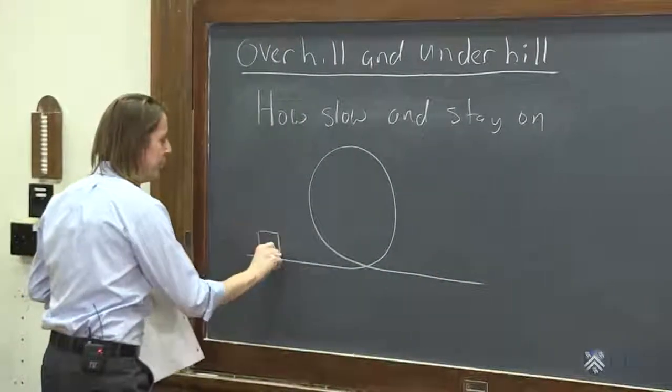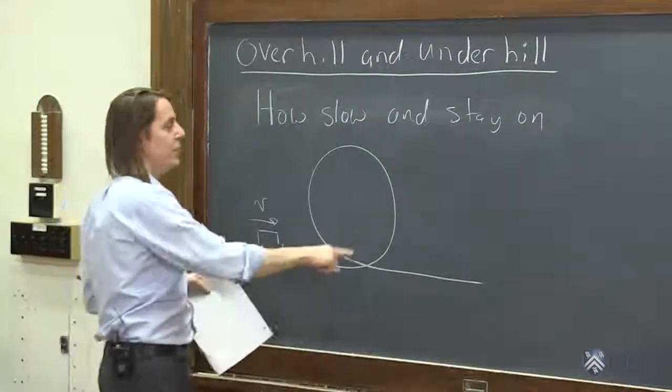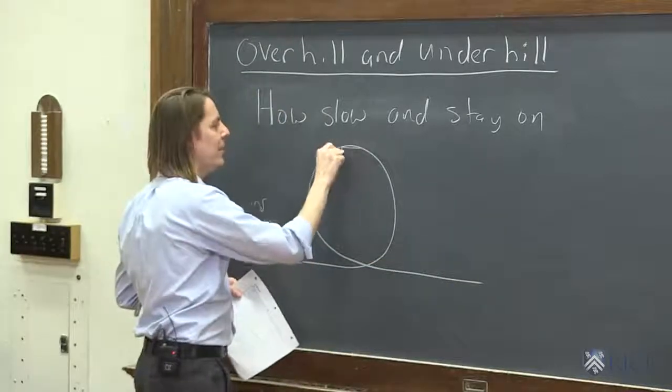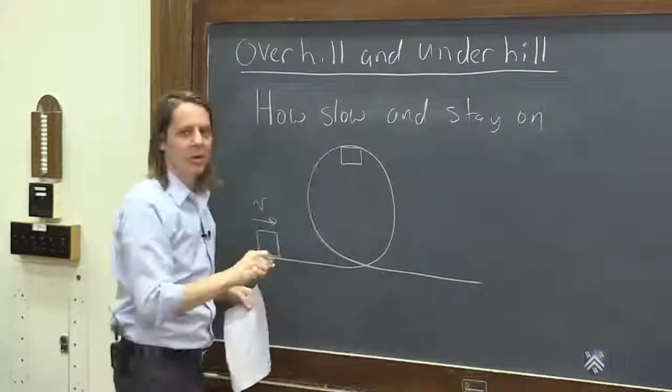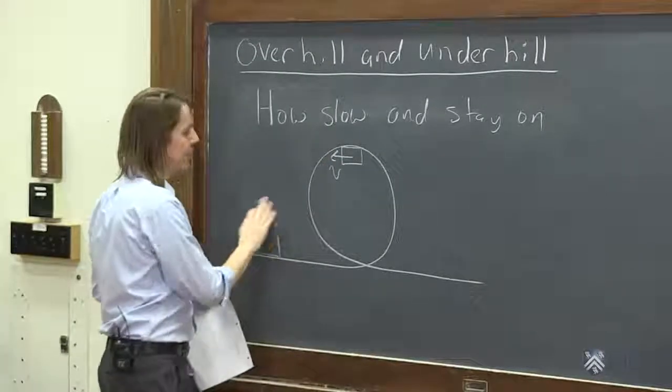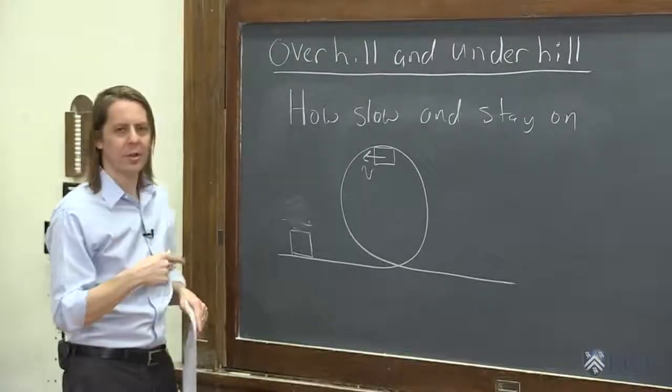And you've got a mass approaching the loop at some velocity. Of course, it's going to slow down and then speed back up. What you really care about is how fast does it need to be going when it's at the top. So we'll say this is the velocity we want, actually.